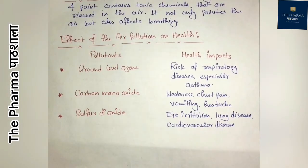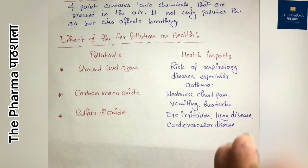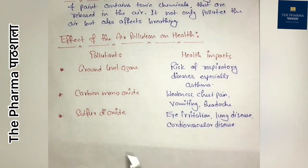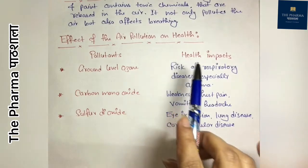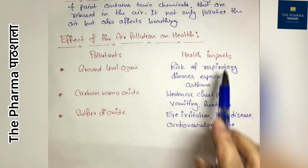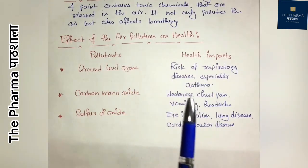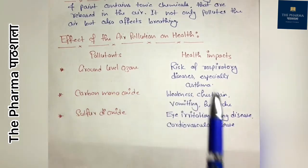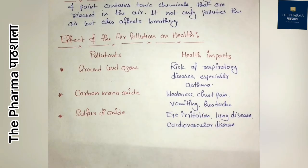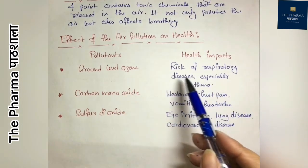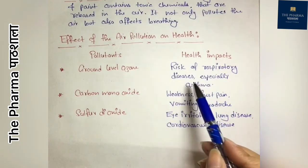The next topic is the effect of air pollution on health. I have made two columns: one is pollutant and one is health impact. Pollutants are gases mixed with air. The first pollutant is ground-level ozone. When mixed in the air, it increases the risk of respiratory diseases such as asthma.